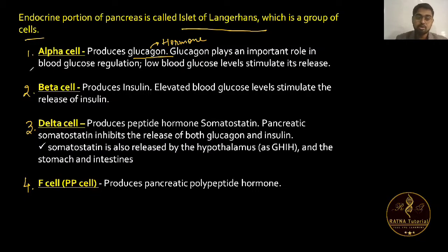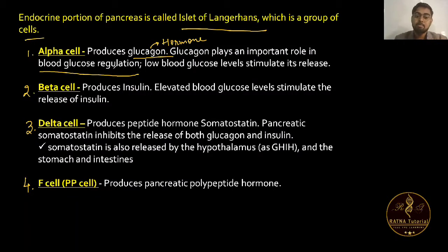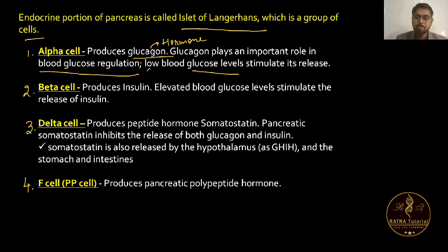Glucagon plays an important role in blood glucose regulation. Low blood glucose level stimulates its release: when the glucose level in the body is low, alpha cells are stimulated to produce glucagon.